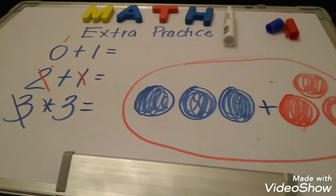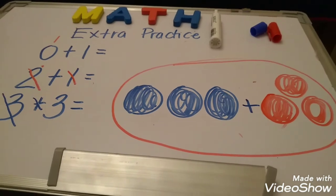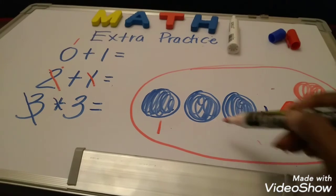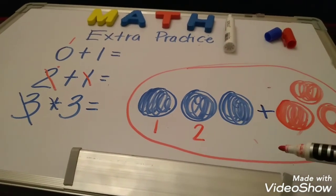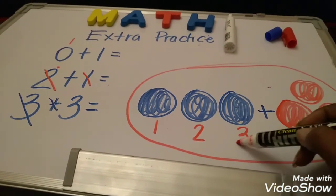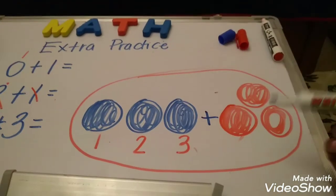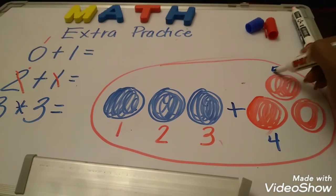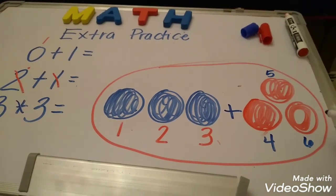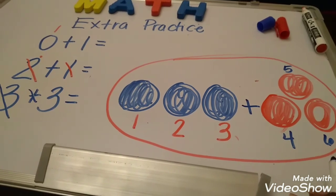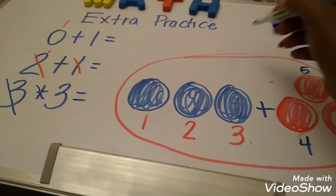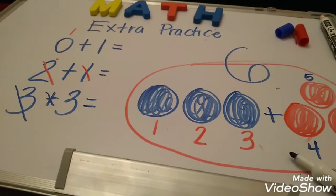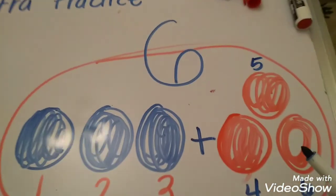Now, how many balls do I have all together? Because two people gave me balls. So, how many balls do I have all together? Let's count them. One. Two. Three. Four. Five. Six. Six. So, how many balls do I have all together? Good job. I have six balls. And guess what? That's our number for the week.